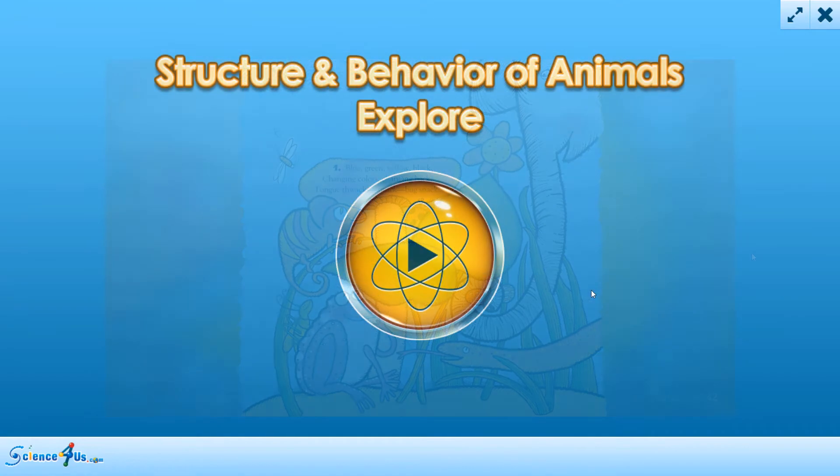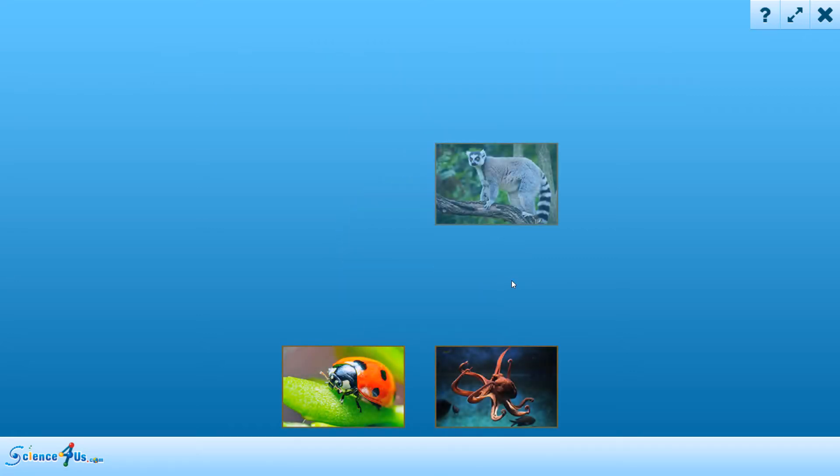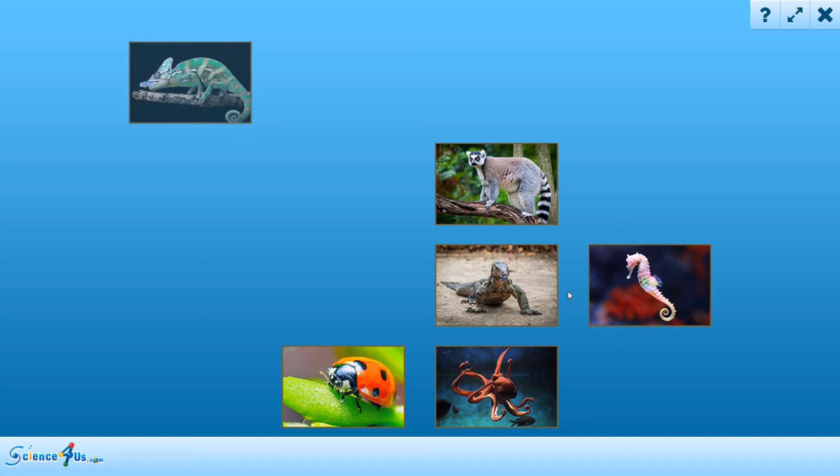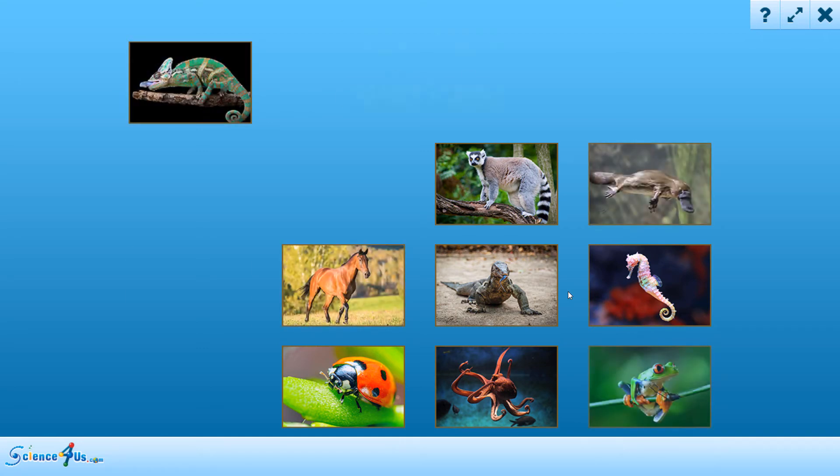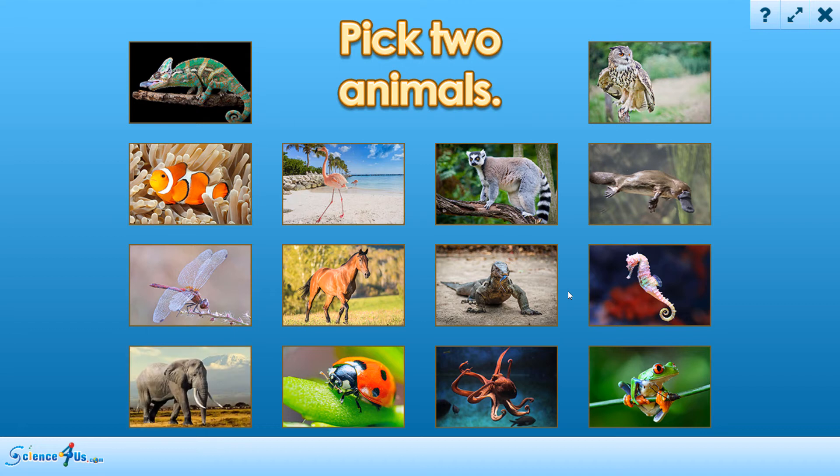In this explore activity, students first pick two animals out of 14 that they will compare and contrast in a Venn diagram. Different animals have many different parts, but they also have a lot of the same parts, even if they look different. Pick two animals so you can compare and contrast the parts of each animal that you can see.